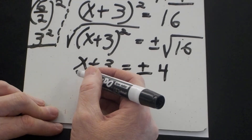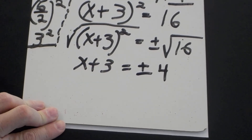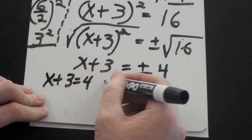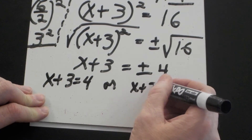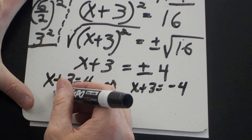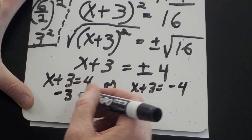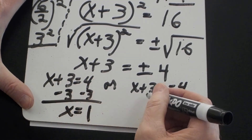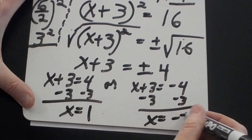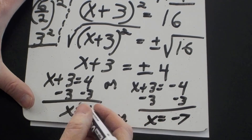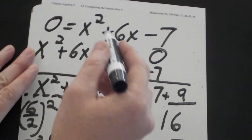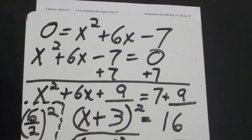Now I solve two equations. For x plus 3 equals 4: subtract 3 from both sides, x equals 1. For x plus 3 equals negative 4: subtract 3 from both sides, x equals negative 7. So my two solutions are x = 1 and x = −7. Plugging either into the original equation will give zero.